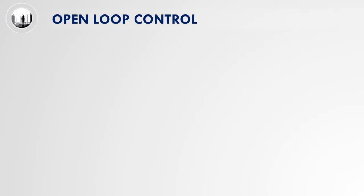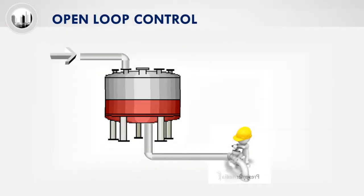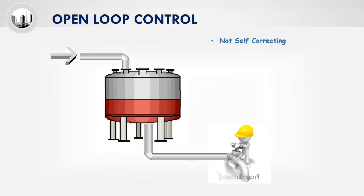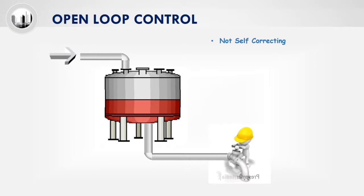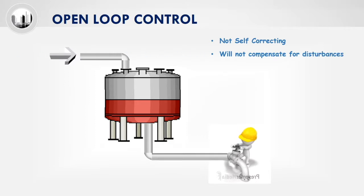Open loop control does not have a feedback loop and thus is not self-correcting. The operator will need to manually throttle the valve opening based on the current level of the tank. Without manual intervention of the operator, the system will not automatically compensate the effects of all disturbances.